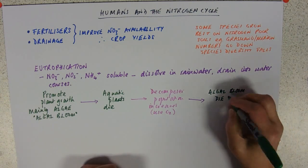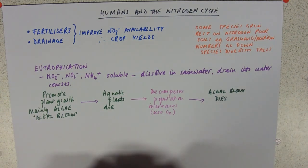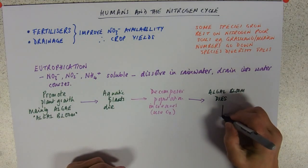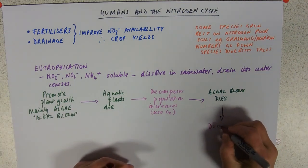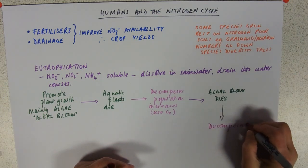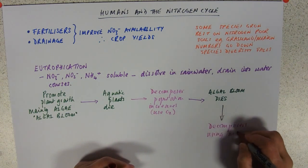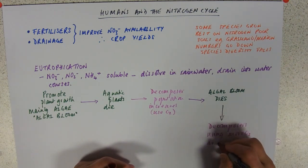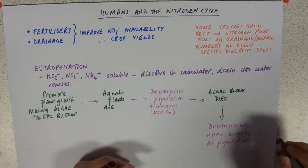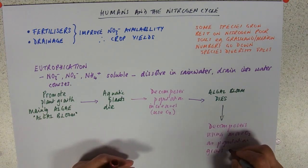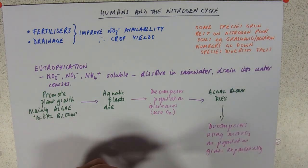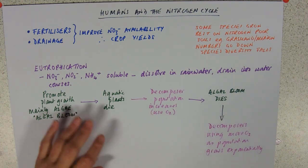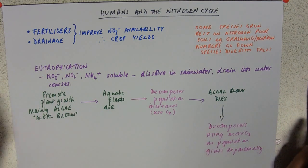In autumn, light intensity drops as we lead into winter. Light intensity is the main limiting factor, so those algae are no longer photosynthesizing and reproducing at the rate they were — they all tend to die off. The decomposer population then has masses of food, so the decomposer population grows, using more oxygen, and their population is growing exponentially. This can relate to limiting factors, the nitrogen cycle, or population growth.